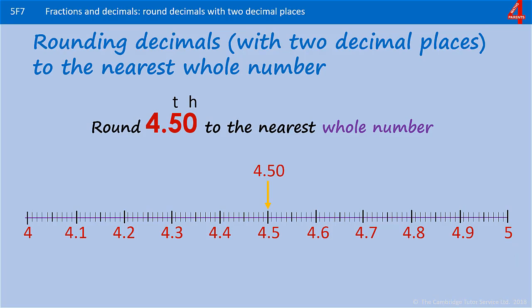Round 4.50 to the nearest whole number. This still has two decimal places even though we've indicated that there's nothing in the hundredths column. As you can see that's just the same as 4.5. The whole numbers either side of that are 4 and 5, and that is exactly in the middle. It's the same distance away from 4 as 5. Because it's 0.5 we're going to round it up. So 4.50 rounded to the nearest whole number is 5.